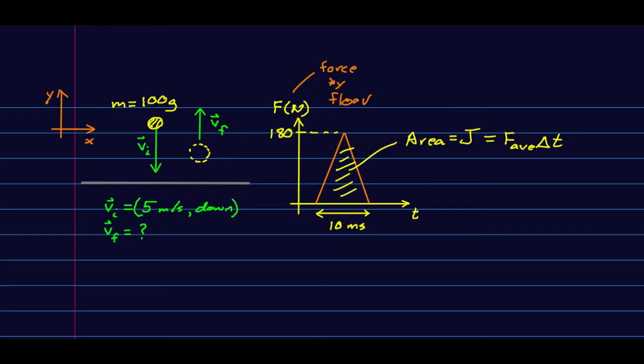Let's calculate this area. It's a triangle, so it should be a half base times height. That base is 10 milliseconds—be careful of units, you always want to work in seconds, kilograms, and meters. The height is 180 newtons. A newton is a kilogram meter per second squared, and we're multiplying that by seconds. So seconds cancel, and we get an answer in kilogram meters per second: 0.9 kilogram meter per second.